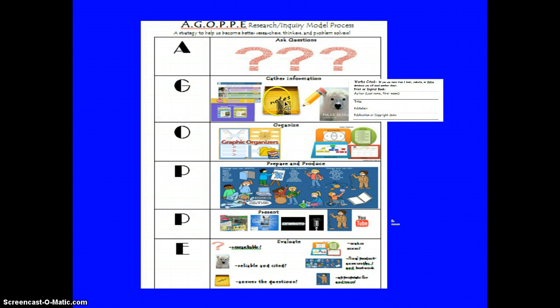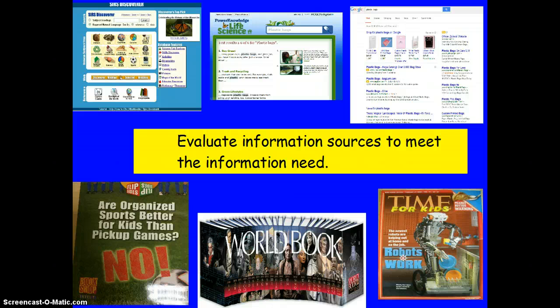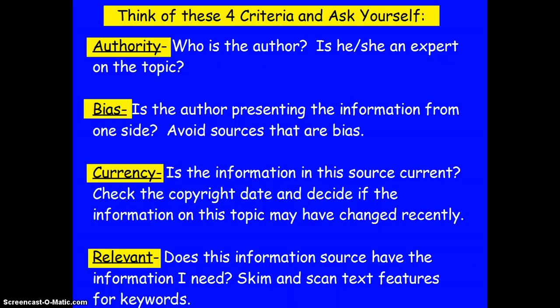As we're gathering information and jotting down sources, keeping track of who the author is, the title, the publisher or organization, and the copyright date makes it easier to manage citations and avoid plagiarism. When evaluating sources, there are key criteria to keep in mind. First is authority — who is the author? Can you tell if this person is an expert on the topic? You don't want to rely on information from someone who isn't knowledgeable about the subject.